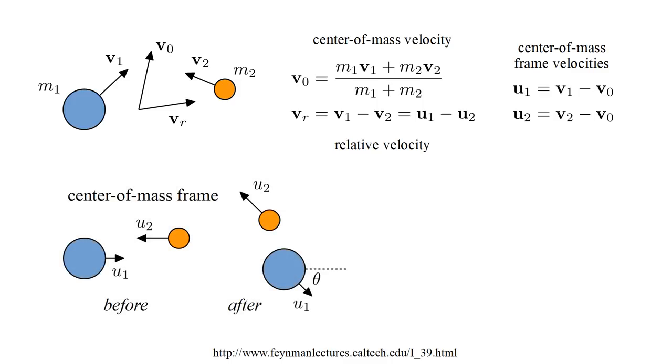In the center of mass frame, the velocities are anti-parallel. We can take them to be in the right and left directions, as shown. After an elastic collision, the velocity magnitudes are unchanged, but the directions are rotated by an angle theta, which depends on the vertical offset of the particles before the collision.